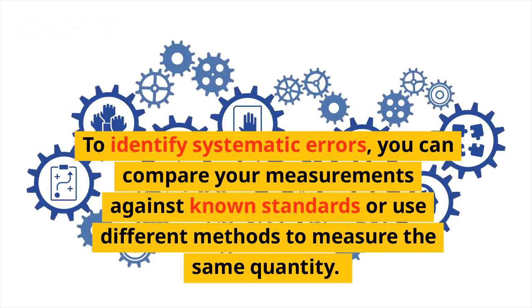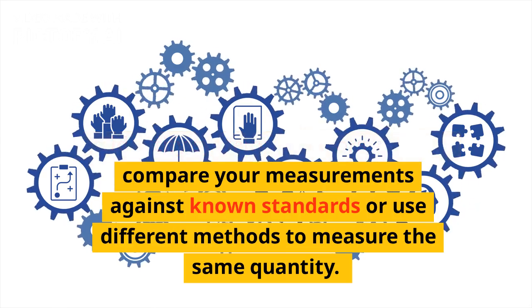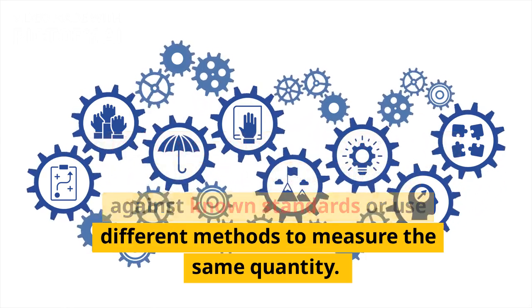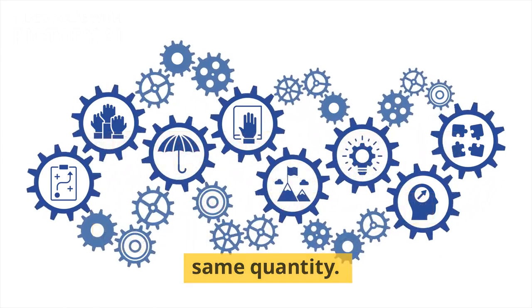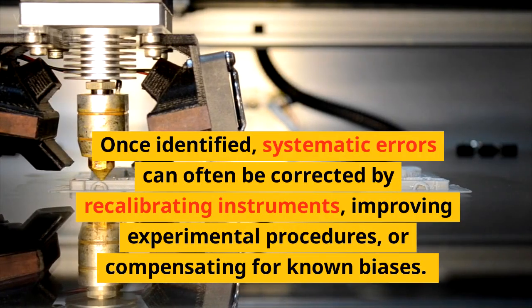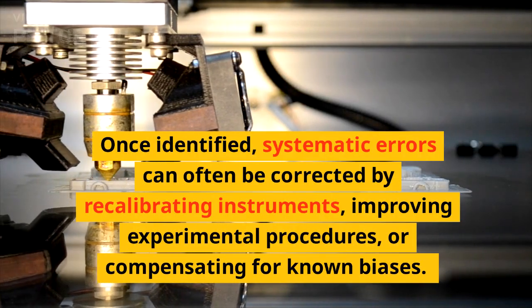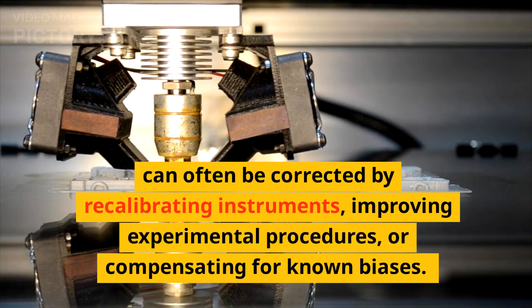To identify systematic errors, you can compare your measurements against known standards or use different methods to measure the same quantity. Once identified, systematic errors can often be corrected by recalibrating instruments.